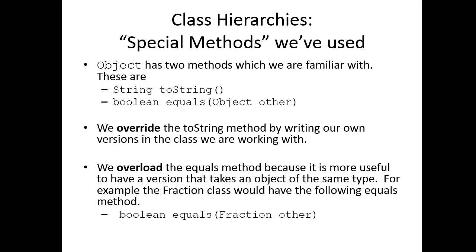We've talked about two special methods that come from the object class. The first one is the toString method, which is used to output objects to the screen, and the equals method. We override the toString method by writing our own version of it in the class we are working with. toString is automatically invoked when we use System.out.println on an object, and by default the instruction in the object class is to simply print out the memory reference. We override that in the subclass to give a different set of instructions about how to print out that object to the screen.